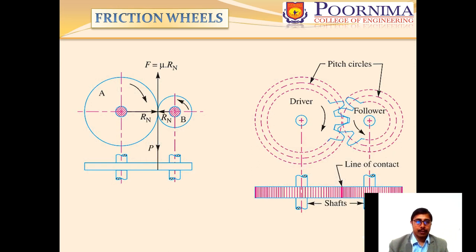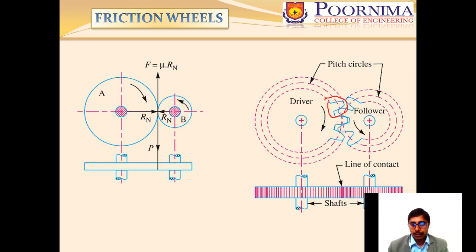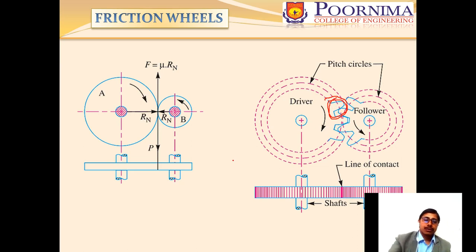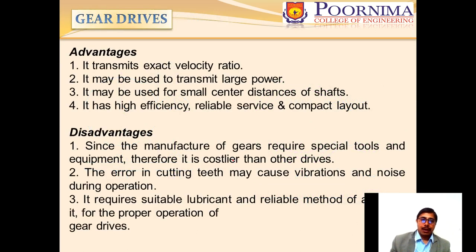Let us understand how gear teeth evolved from a simple phenomenon. If wheel A and wheel B rotate with each other because of friction, they will rotate, but after some time the friction reduces and they slip on each other. That is why we created teeth profiles so that they can rotate with respect to each other without slipping. This is how gears evolved.